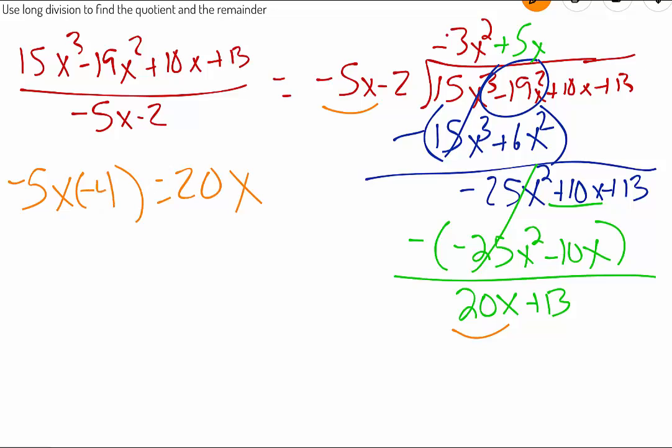Well, negative 5 times negative 4 gives us a positive 20. We have an x. We only need an x, so we're good there. We're only going to multiply that by negative 4. So I'm going to put that minus 4 up here.